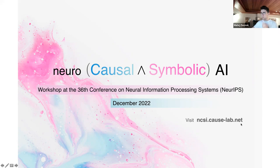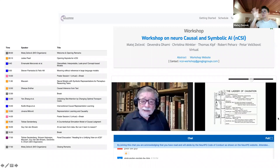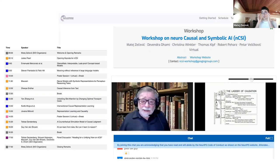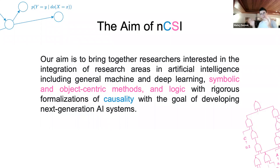You can check out the website. We also had the honor to have Judea Pearl himself with us. Looking at the schedule: we had different oral presentations, talks, a keynote, a panel, and a poster session. If you're registered at NeurIPS you can re-watch the whole workshop. The aim was bringing together symbolic and object-centric methods and logic with the formalizations we have in Pearlian causality, in order to develop next-generation AI systems.